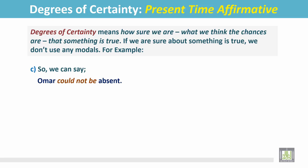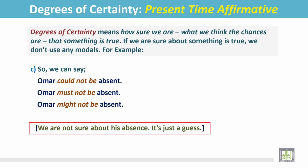So we can say, Omar could not be absent. Or we can also say, Omar must not be absent. We can also say, Omar might not be absent. We are not sure about his absence. It is just a guess. He has an exam today and he should be present in the campus.